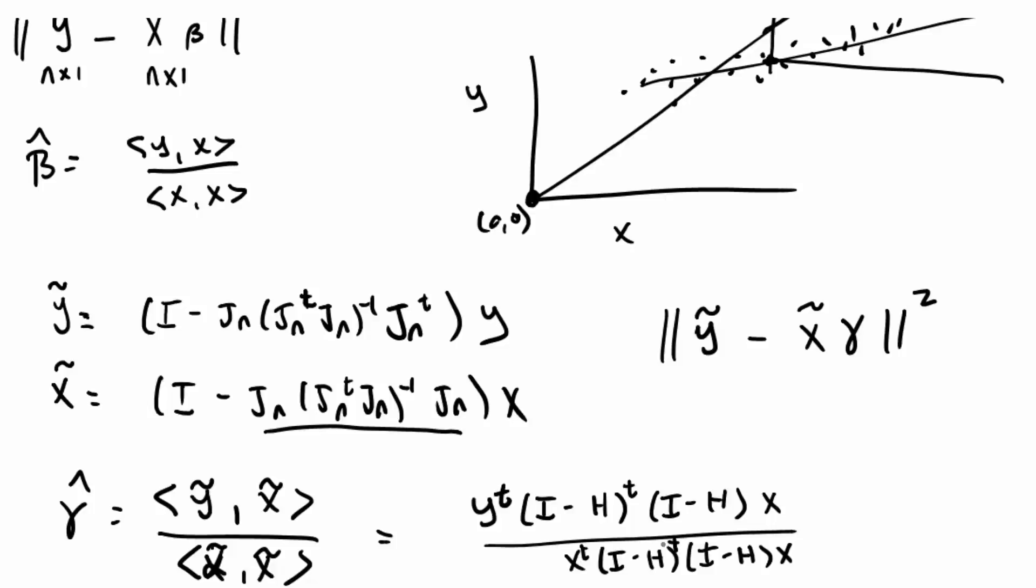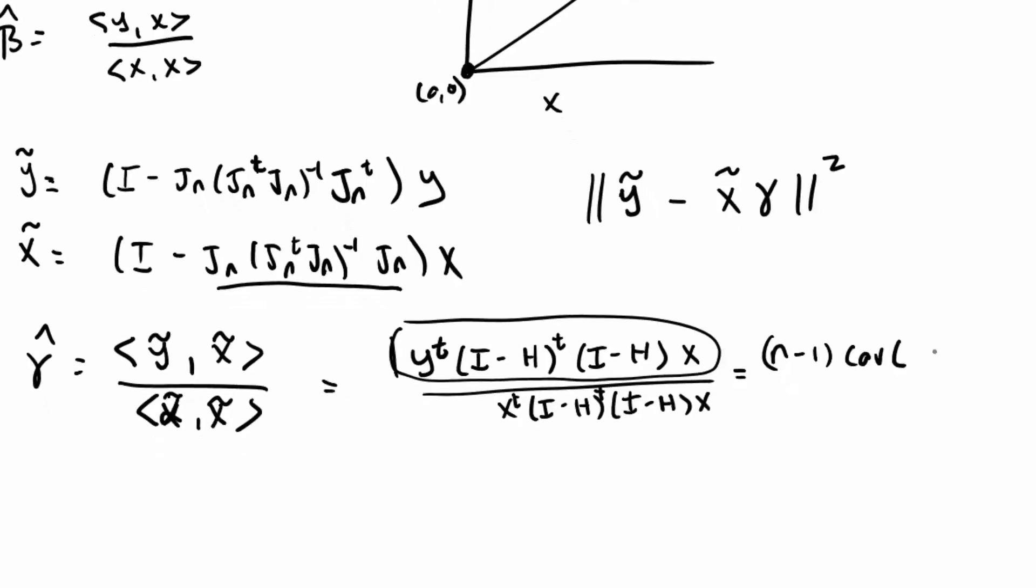So now if you go back to our previous lecture, or a couple of lectures previous when we were talking about variances, what you can see is that this quantity in the top works out to be n minus 1 times the covariance, the empirical covariance between y and x. And this quantity in the denominator is n minus 1 times the variance of x.